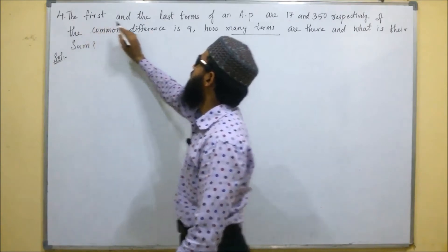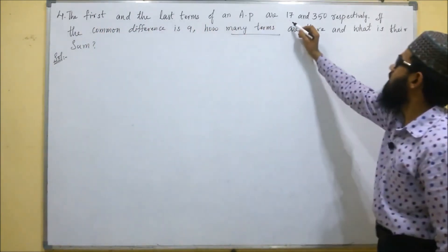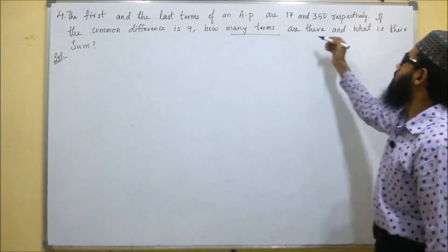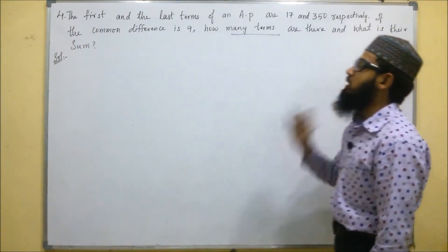In the fourth problem, they said that first and the last terms of an AP are 17 and 350 respectively. If the common difference is 9, how many terms are there and what is their sum?